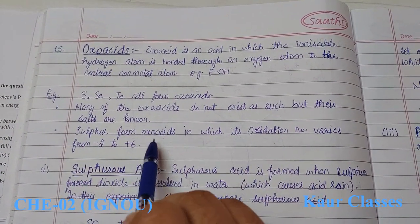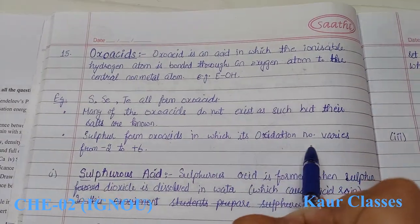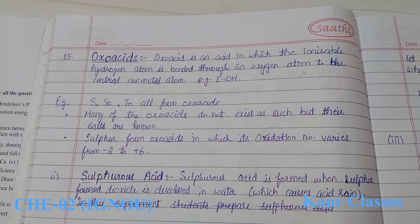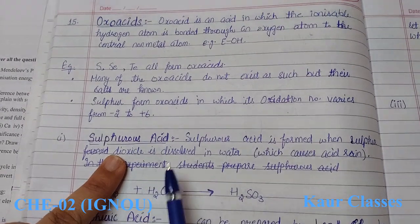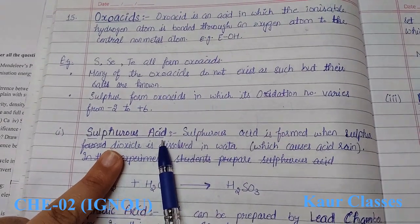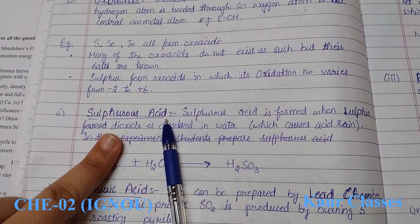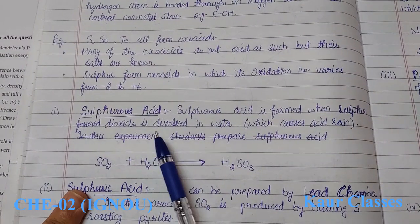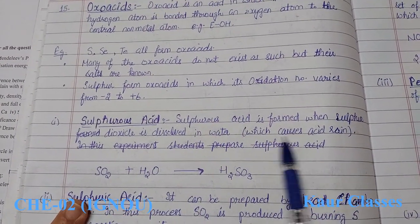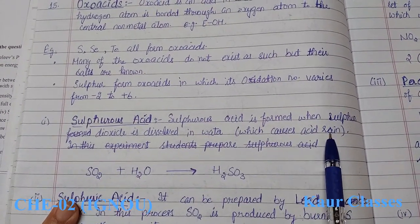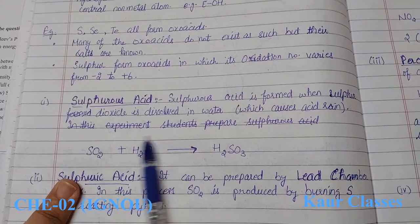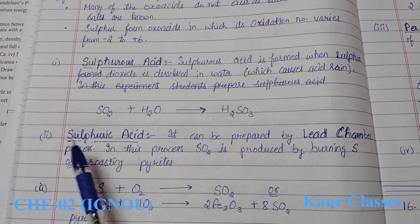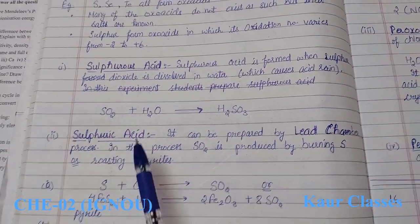The first sulfur oxoacid is sulfurous acid (H2SO3). It is formed when sulfur dioxide is dissolved in water, which produces sulfurous acid. The second is sulfuric acid (H2SO4), which can be prepared by the lead chamber process among other methods.